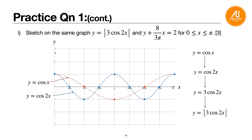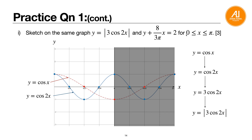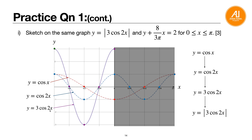Times 3 affects the amplitude — it's no longer 1 to minus 1, it's 3 to minus 3. Block out the region beyond π since the range is 0 to π. Multiply each guiding point: 0 stays 0, minus 1 becomes minus 3, 1 becomes 3. You get a taller, steeper wave — the purple curve — which is 3 cosine 2x.